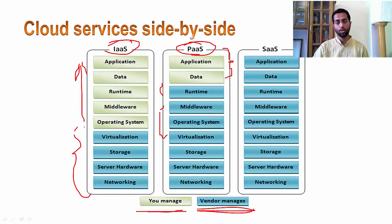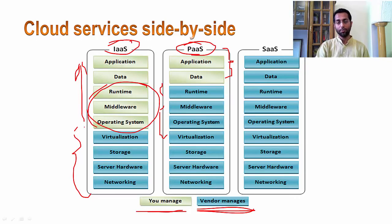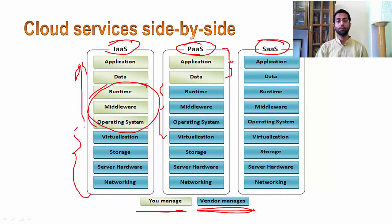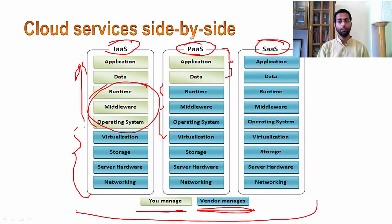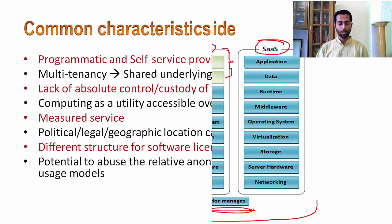What you lose with Platform as a Service is flexibility — more control over the operating system, runtime, and hardware — but you are relieved of the burden of managing and maintaining that stack. Moving further to Software as a Service, almost everything is managed and operated by the service provider. As a consumer of a SaaS application, you simply make use of the application; how it is developed, maintained, or managed is handled entirely by the vendor. This is a side-by-side view of the major services available on a cloud provider.